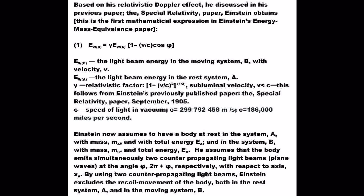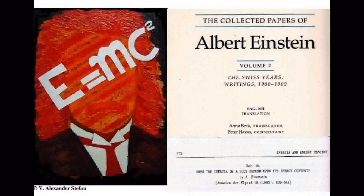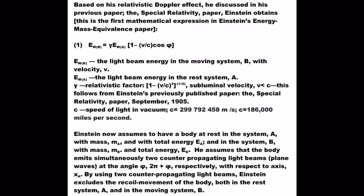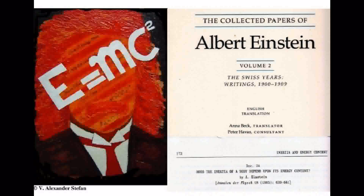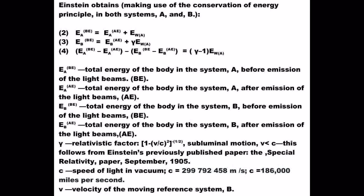This is the first mathematical expression in Einstein's energy-mass equivalence paper. Einstein now assumes a body at rest in system A with mass M_A and total energy E_A, and in system B with mass M_B and total energy E_B. He assumes the body emits simultaneously two counter-propagating light beams — plane waves — at an angle with respect to axis X_A. By using two counter-propagating light beams, Einstein excludes the recoil movement of the body, both in the rest system A and in the moving system B. Einstein obtains, making use of the conservation of energy principle in both systems A and B.